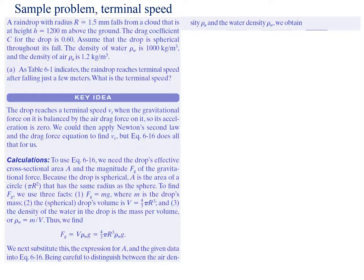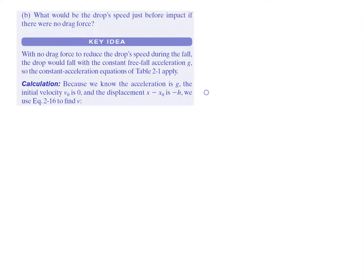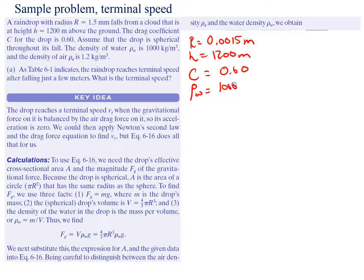Sample problem: A raindrop with a radius of 1.55 millimeters (0.0015 meters) falls from a cloud at a height of 1200 meters above the ground. The drag coefficient C for the raindrop is 0.60. Assume the drop is spherical throughout its fall. The density of water is 1000 kilograms per cubic meter, and the density of air is 1.2 kilograms per cubic meter.